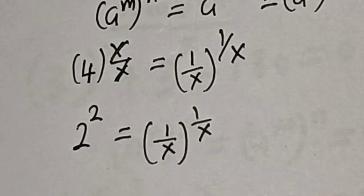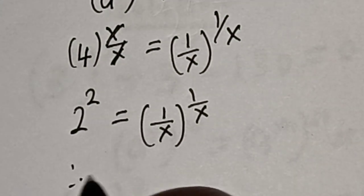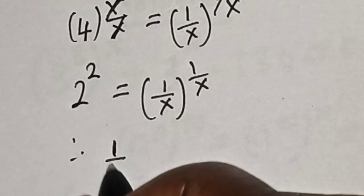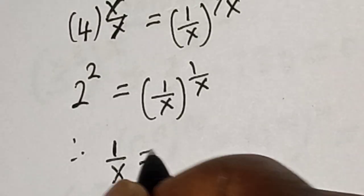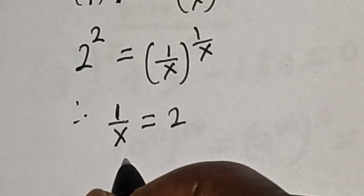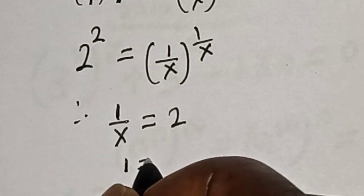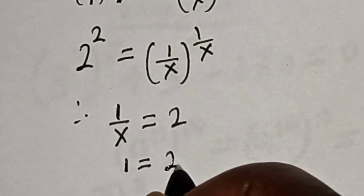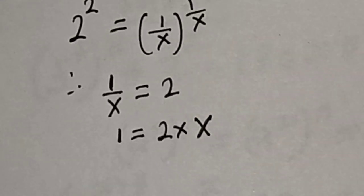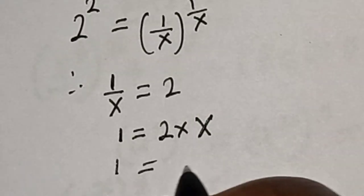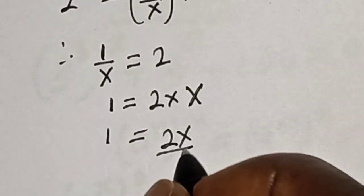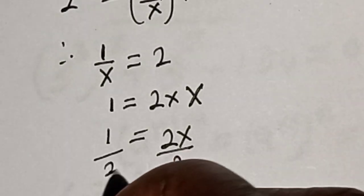So 1 over s is equal to 2. Now let's cross multiply: 1 is equal to 2 multiplied by x, so 1 is equal to 2x. Now let's divide both sides by 2.